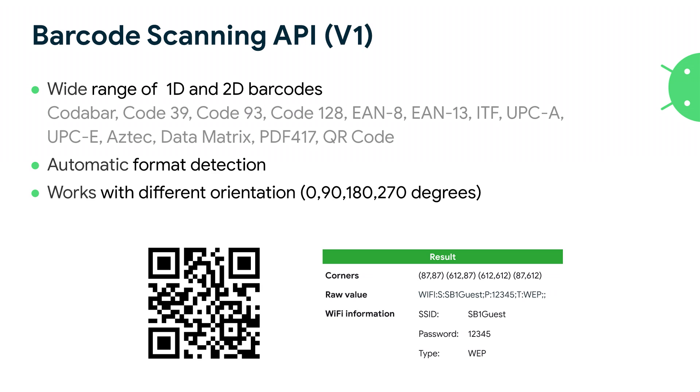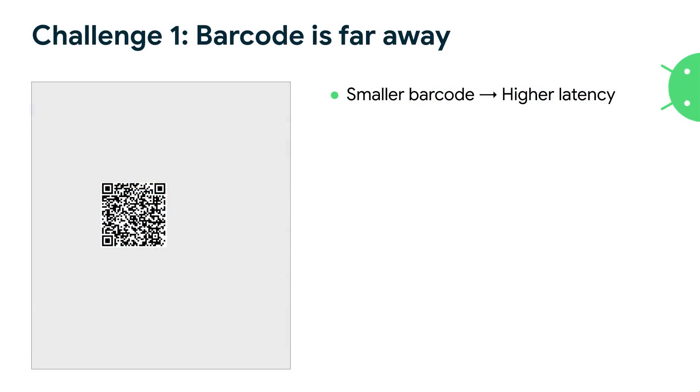Since many people use this feature, we receive a lot of feedback. In some scenarios, V1 doesn't work very well. The first challenge: when a barcode is very far away, it appears small relative to the whole image, and latency increases. In our barcode decoder, we try to find the barcode starting from every pixel. If the barcode is big, we skip covered pixels, but if it's small, fewer pixels are skipped — that's why barcode size affects latency.